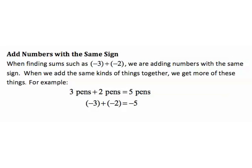Add numbers with the same sign. When finding sums such as negative 3 plus negative 2, we are adding numbers with the same sign. When we add the same kinds of things together, we get more of these things. For example, if we take 3 pens plus 2 more pens, altogether we have 5 pens. That same thinking guides us when adding negatives: 3 negatives plus 2 more negatives gives us 5 negatives.